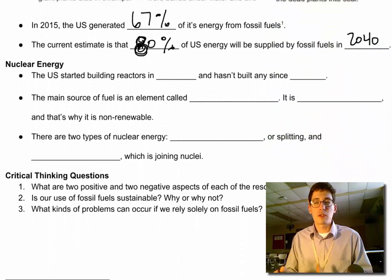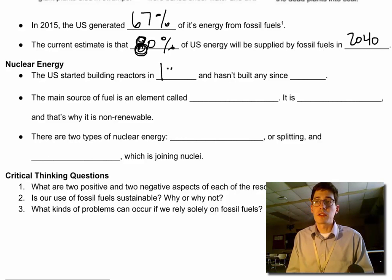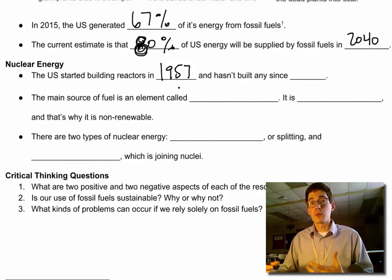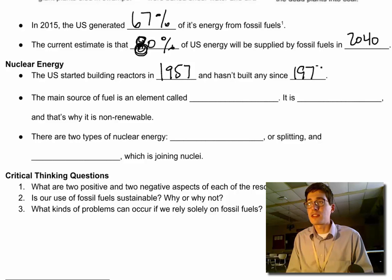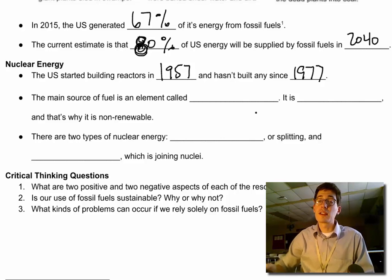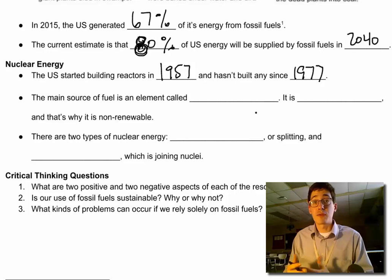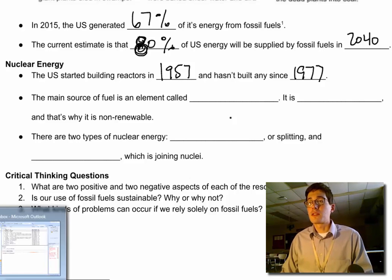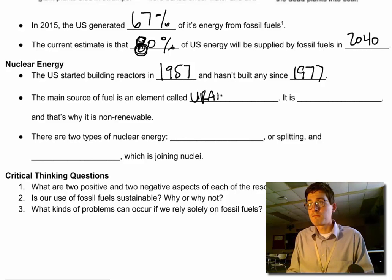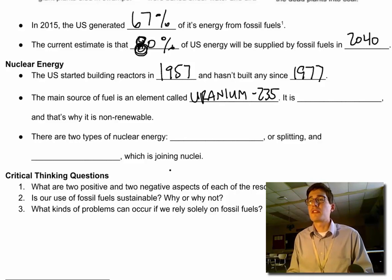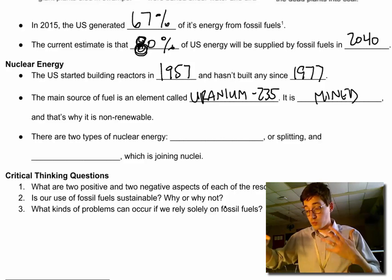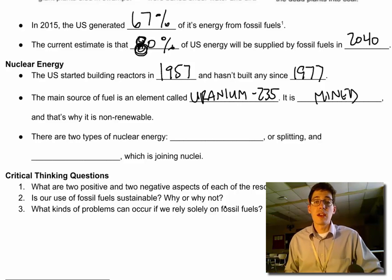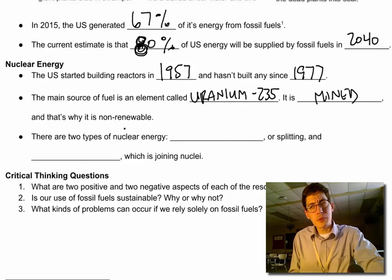Another type of non-renewable energy I want to introduce in this video is nuclear power. The United States started building nuclear reactors in 1957 — back in the mid-50s after World War II, during the Technological Revolution. We started building these reactors, but we haven't built any since 1977. All of our nuclear reactors — there's one in Indiana, the Palisades nuclear power plant — have been built, and none have been built in the last 40 years, so our infrastructure is starting to wear down. Nuclear reactors use a non-renewable fuel called uranium-235, which is like a specific form of the element uranium. It's mined — it comes out of the ground. We dig it up, refine it into a concentrated form called uranium-235 that we can use in our reactors. That's why it's non-renewable: it's a mineral we have to mine from the ground.